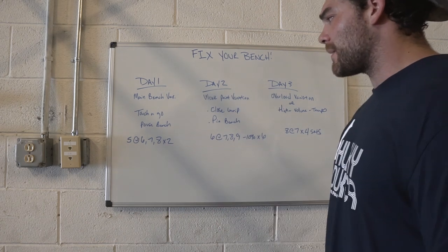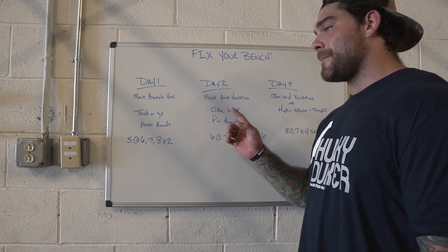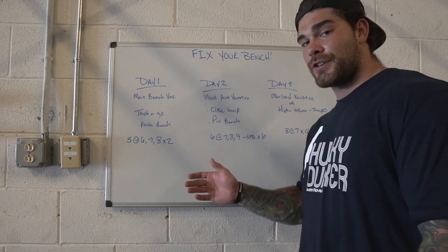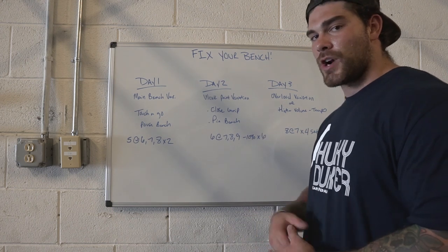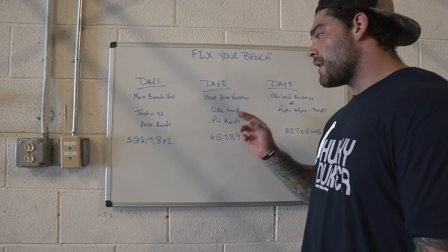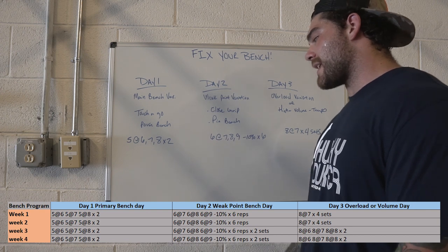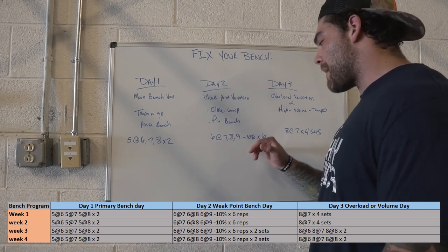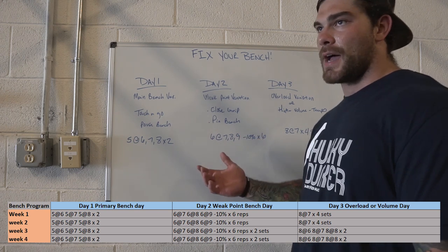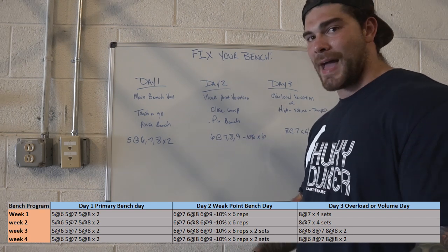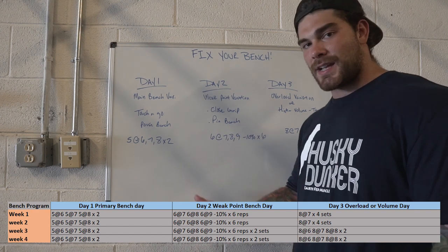Day two — focus on a weak point variation. This will probably be Tuesday or Thursday for me. The weak point variation could be close grip if you have weaker triceps, or pin bench. For this day I do a little more volume: six reps at RPE 7, six reps at RPE 8, six reps at RPE 9, then a back-off set — take 10% off that top set and hit six reps. Pick whichever variation is closest to where you notice you're getting stuck.